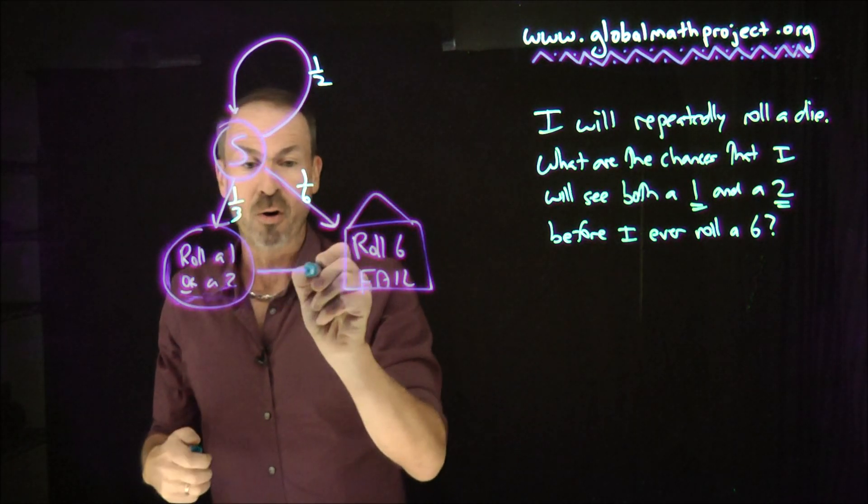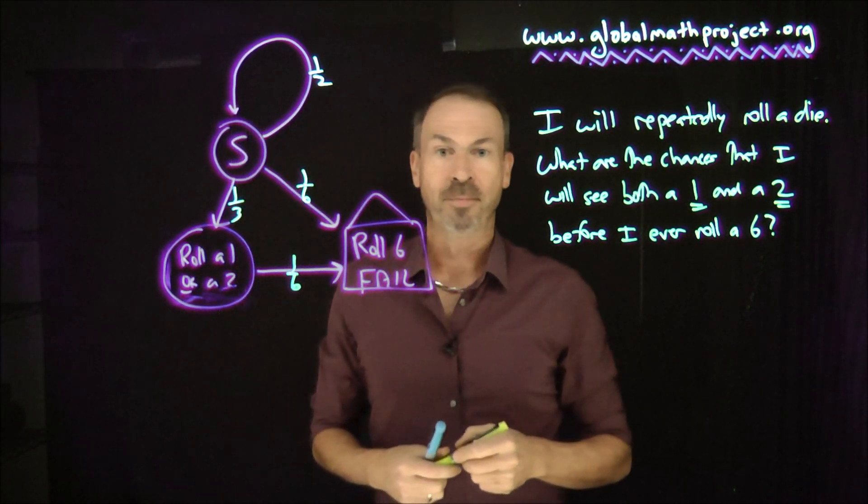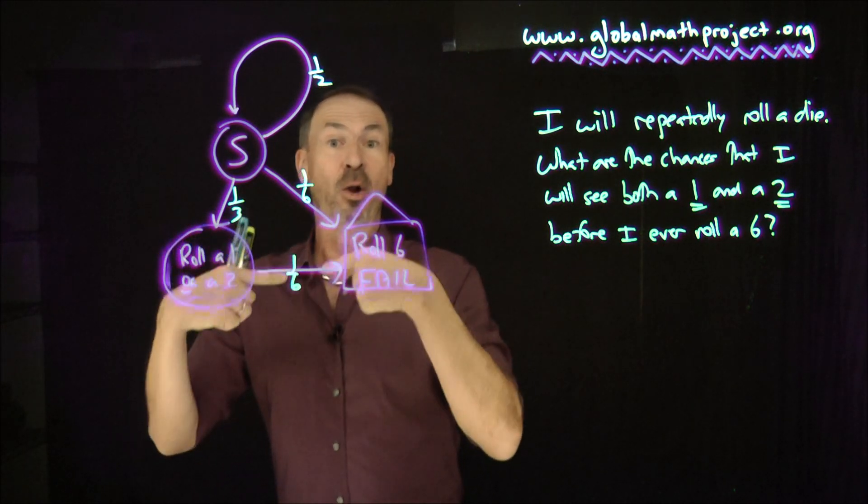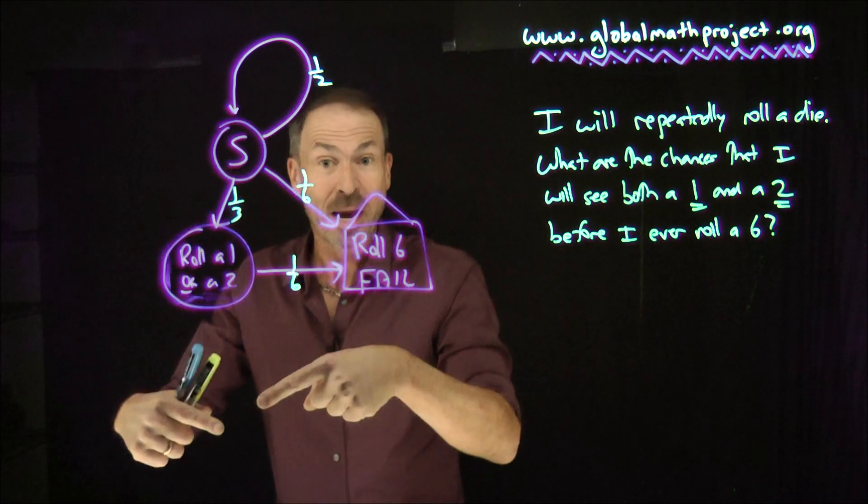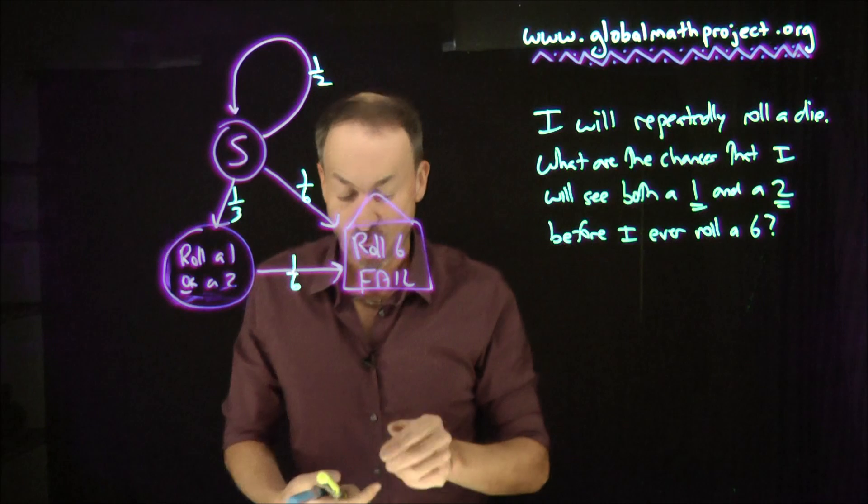Well, of course, if they roll a 6 right away after that, one-sixth of them will, they've gone straight to the fail house. But if they've got a 1 and they roll the other number, they'll win, because they have both a 1 and a 2. Or if they've got a 2 and they roll the other number, they'll win. They've got both a 1 and a 2.